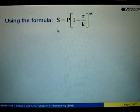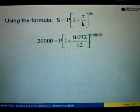Now using the same formula, S equals to P bracket 1 plus R over K to the power of NK. So from here, substitute S with 20,000 and then substitute R with 0.072. K equals to 12. N is 10 and K is 12.